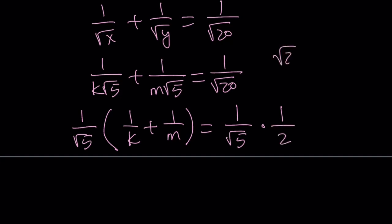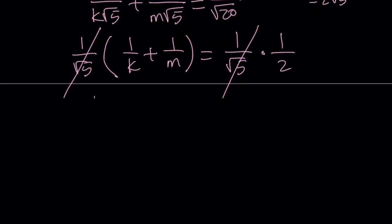That is 2 times the square root of 5. So now we can cancel these out and we end up with a very simple, very nice equation: 1 over k plus 1 over m equals 1 half.